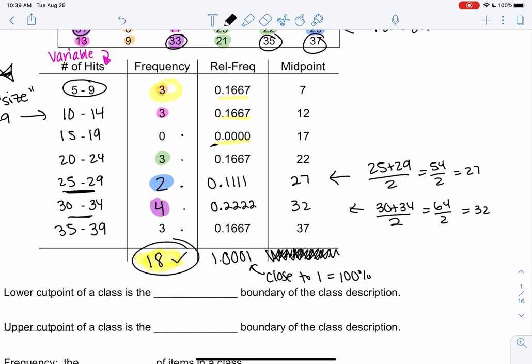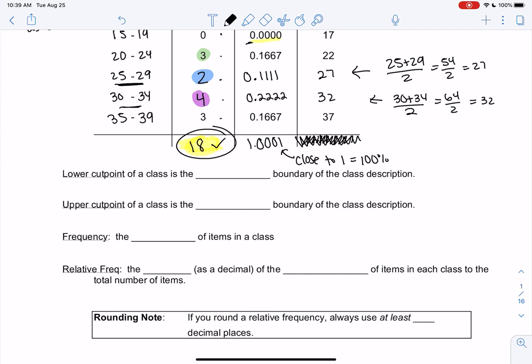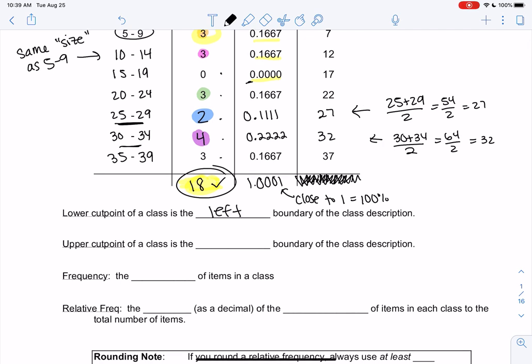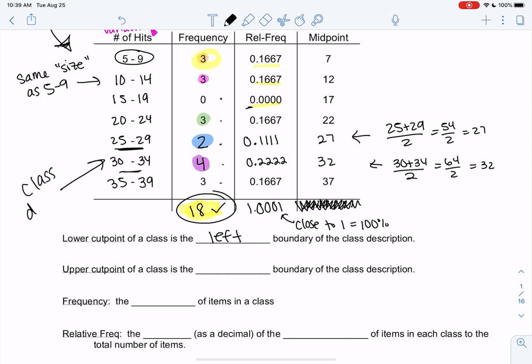We'll look at some more, and then we'll see that you can kind of make more meaningful conclusions. So I'm going to go through the definitions, and then we'll save the next example for the next video. But the lower cut point is the left boundary of each class description. So these are my class descriptions, just how are we describing the groups. So like 5, 10, 15, 20 are my left endpoints. And then the upper cut points are the right ones. So that would be like 9, 14, 19, etc. So the left side versus the right side. Lower and upper. Frequency is the number of items in a class. So we just did that. We counted how many times something showed up. The word class is just kind of a fancy word for group.